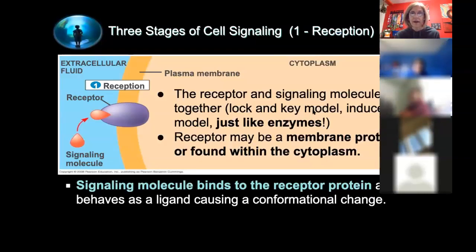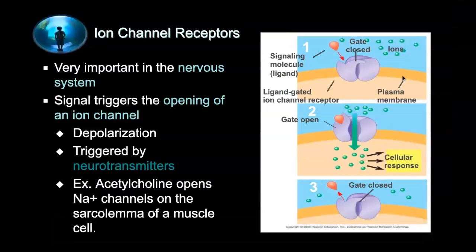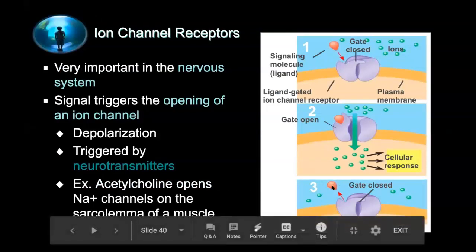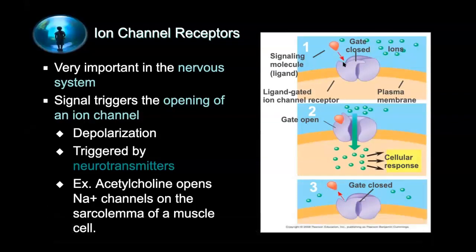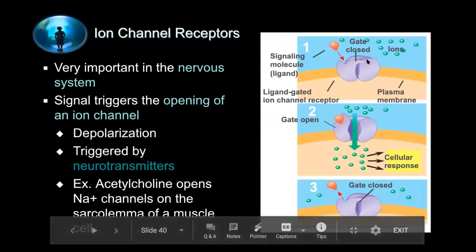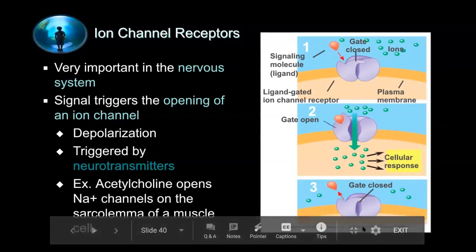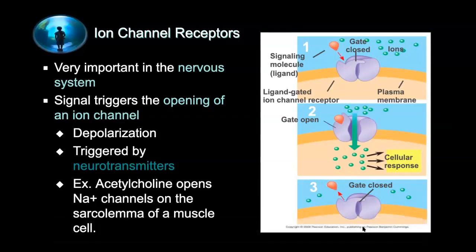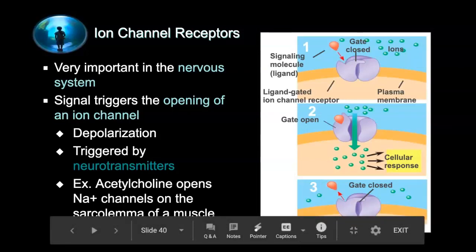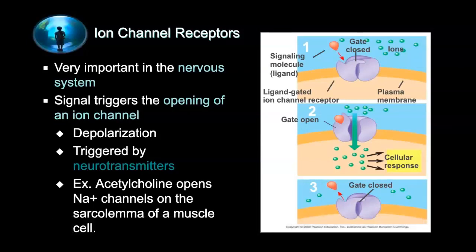These examples show how a ligand causes conformational change. This is a gated channel: when closed, the ligand binds and opens it — this is how acetylcholine works. When acetylcholine binds that receptor, it opens the sodium channel, allowing sodium to rush in. Channel receptors are especially important in the nervous system; that sodium influx causes the depolarization discussed previously.